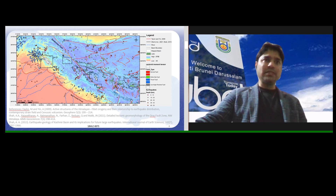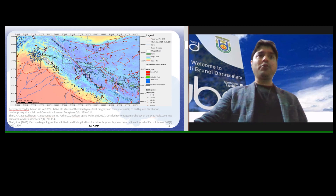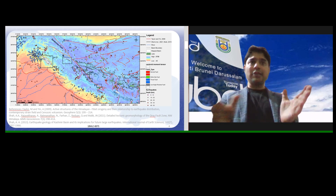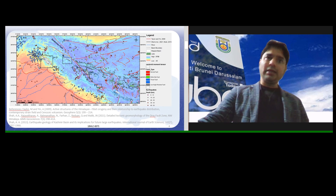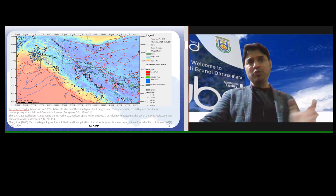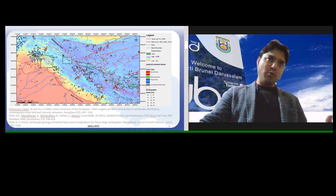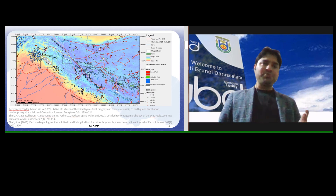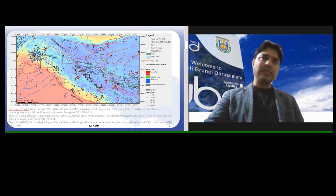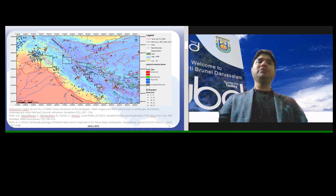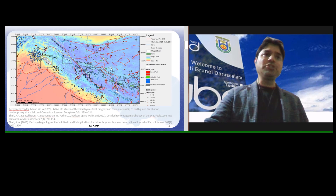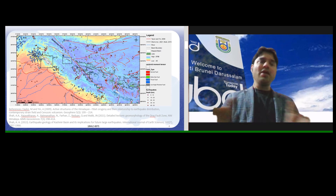I will take you through examples from west to east, mostly from the northwestern portions. Starting with Kashmir: to understand the Kashmir area, the Kashmir basin sits on top of a megathrust fault. It is a huge, beautiful basin surrounded on all sides by mountains — many quite high and mostly snow-covered throughout the year.